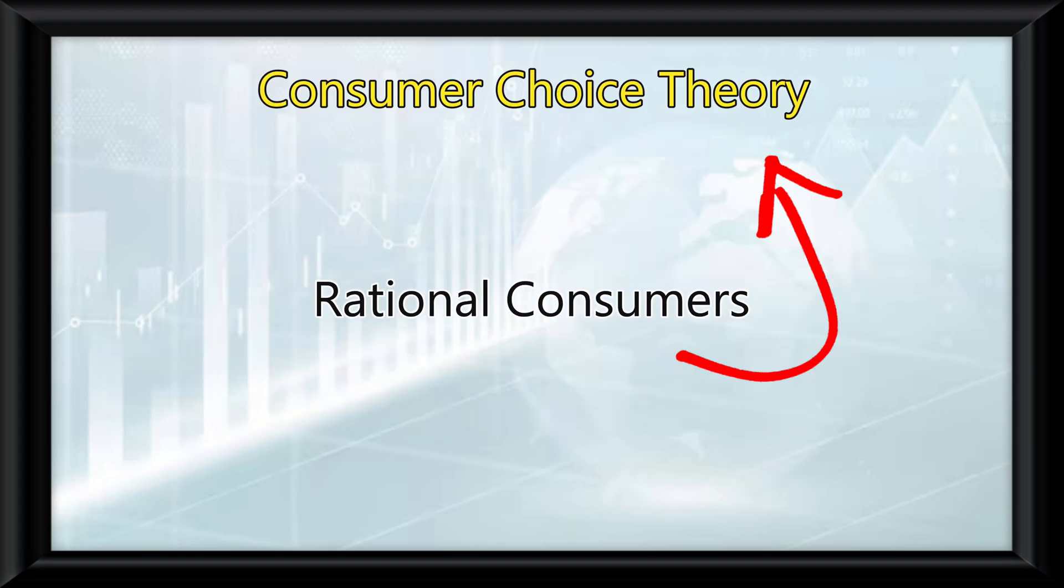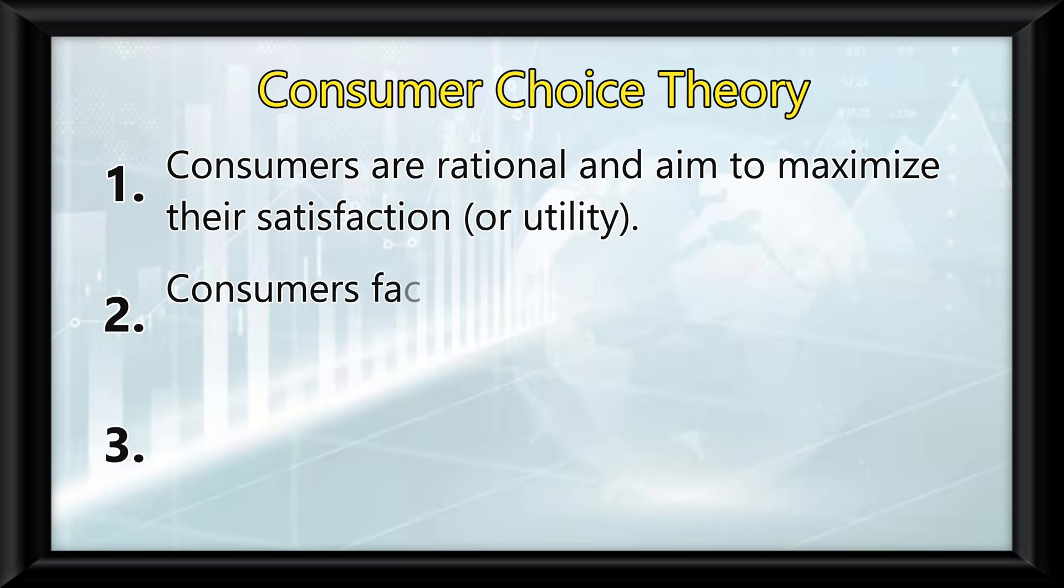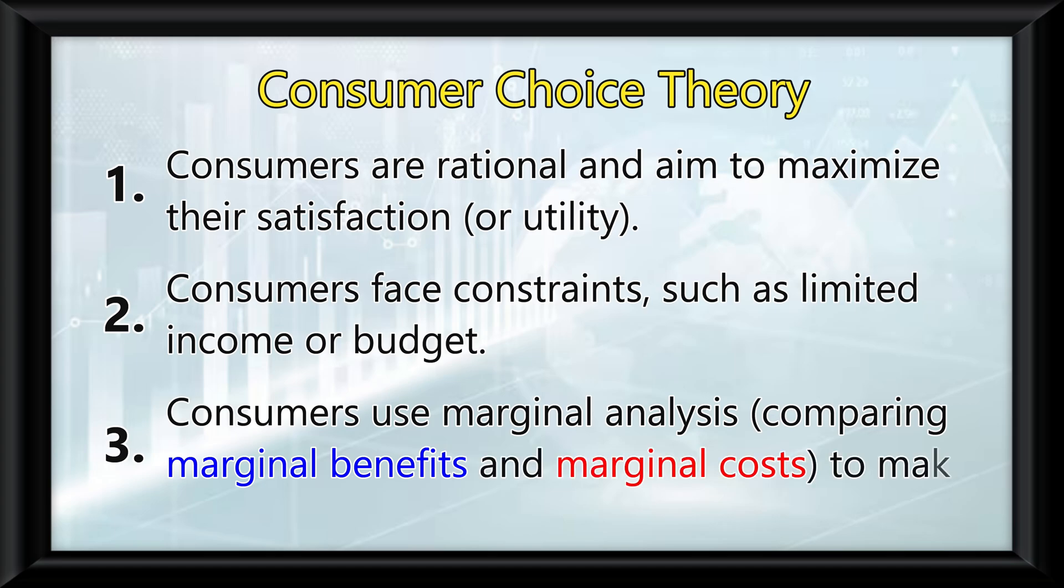This leads us into the consumer choice theory, which revolves around three ideas. Consumers are rational and aim to maximize their satisfaction or utility. Consumers face constraints, such as limited income or budget. And number three, consumers use marginal analysis, which is comparing marginal benefits and marginal costs, to make sure it's the optimal decision.